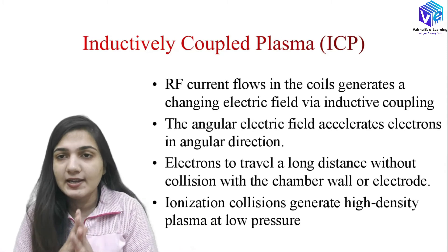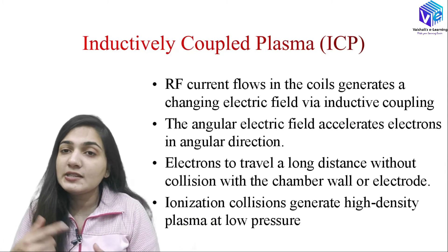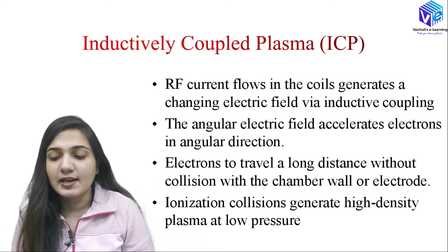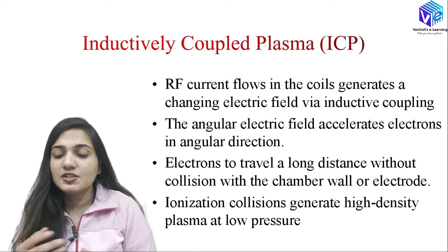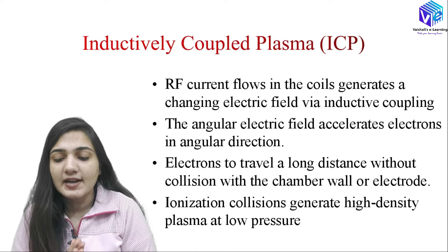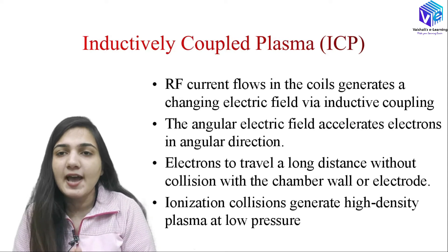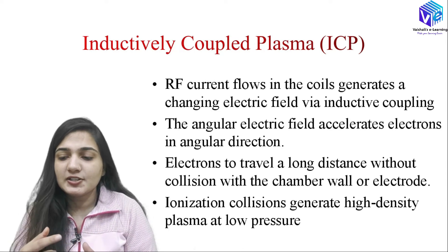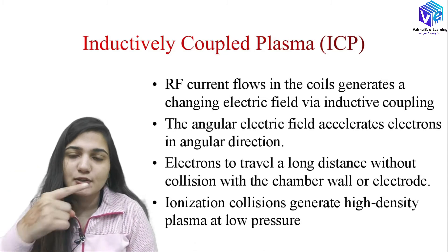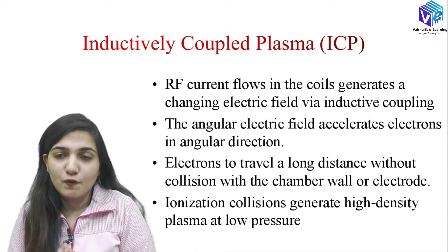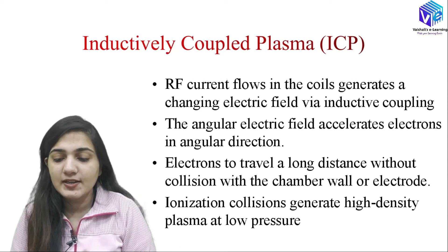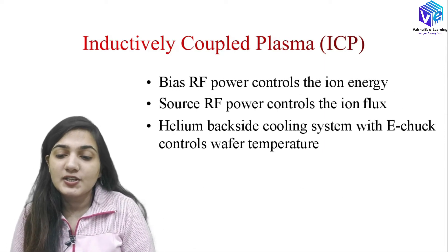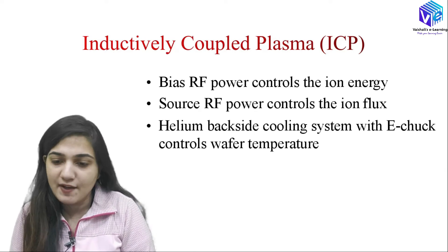During this longer distance traveled by the electrons, there will be fewer collisions with the chamber wall or with the electrodes. Ionization collisions generate high-density plasma at lower pressure. The rotating current produces the changing electric field, which accelerates electrons in the circular direction, resulting in fewer collisions with the container walls and generating higher ionization collisions — meaning high-density plasma can sustain at lower pressure.